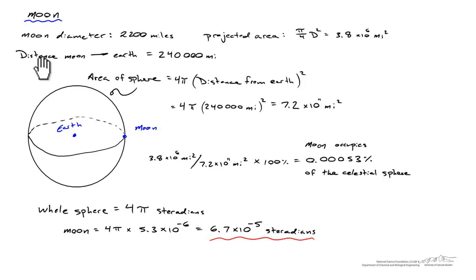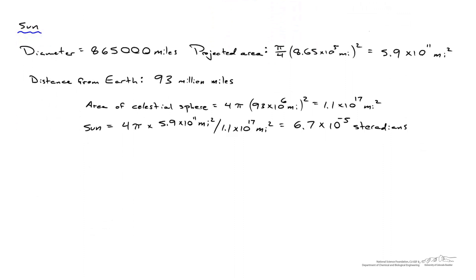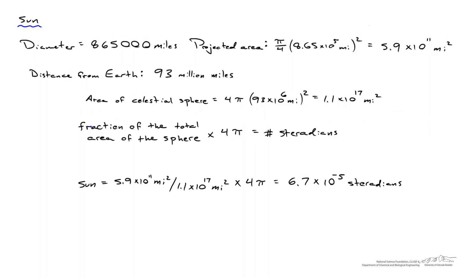Now let's contrast this with the sun. The diameter of the sun is 865,000 miles. Its projected area is π/4 times the diameter squared, giving 5.9 × 10¹¹ square miles. The Earth is 93 million miles from the sun, so the area of its celestial sphere is 4π × (93 million miles)², or about 1.1 × 10¹⁷ square miles. Taking the fraction of the sun's area divided by the celestial sphere area, multiplied by 4π, gives us 6.7 × 10⁻⁵ steradians.